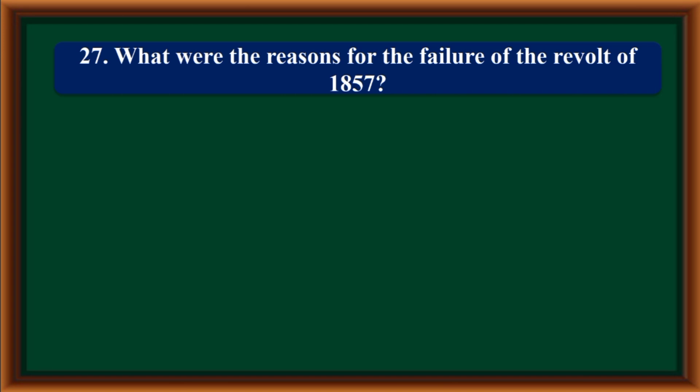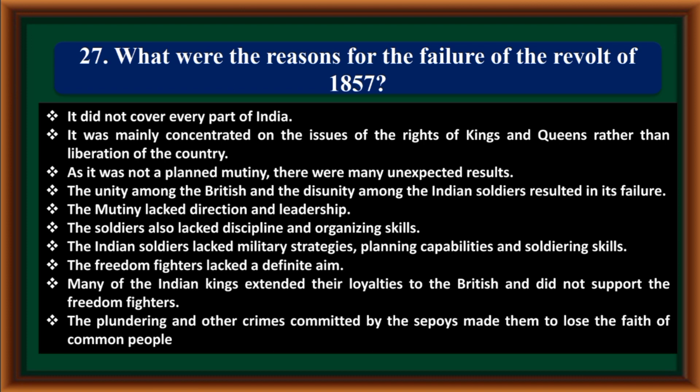What were the reasons for the failure of the Revolt of 1857? It did not cover every part of India and was mainly concentrated on the rights of kings and queens rather than liberation of the country. As it was not a planned mutiny, there were many unexpected results. Unity among the British and disunity among Indian soldiers resulted in failure. The mutiny lacked direction and leadership; soldiers lacked discipline and organizing skills. Indian soldiers lacked military strategies and planning capabilities. Freedom fighters lacked a definite aim. Many Indian kings extended loyalty to the British and did not support the freedom fighters. Plundering and crimes by spies made them lose the faith of common people.